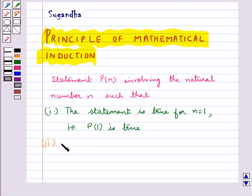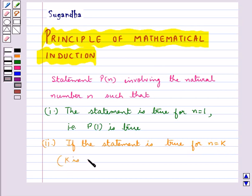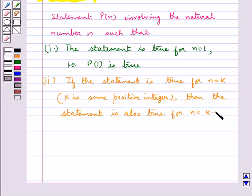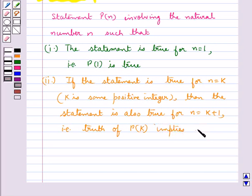The second condition is: if the statement is true for n equal to k, where k is some positive integer, then the statement is also true for n equal to k plus 1. That is, the truth of P(k) implies the truth of P(k+1).